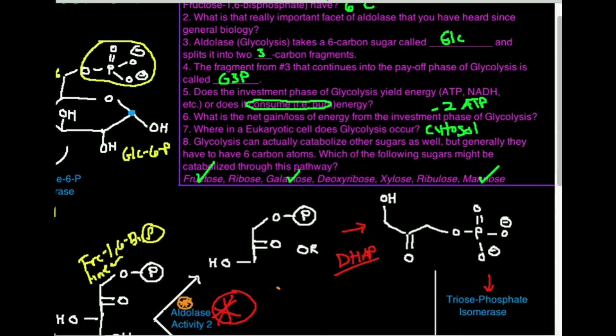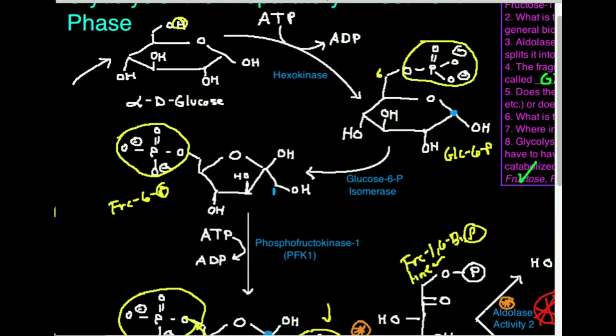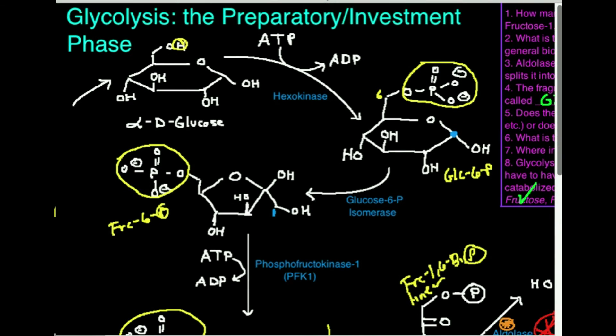Those are some really important thinking questions about glycolysis, specifically the investment phase. In the next video, we're going to cover the payoff phase and compare and contrast it to this phase. In the preparatory or investment phase, we had to burn two ATP — we lost two ATP — but we're going to totally and more than make up for that loss in the next few reactions. Make sure to like this video, subscribe to the channel for future videos and notifications. I hope this helped — see you soon.